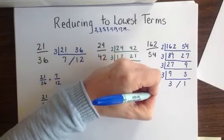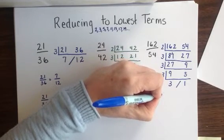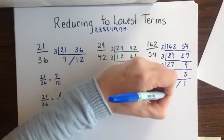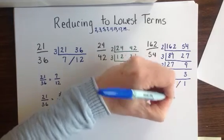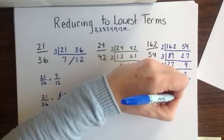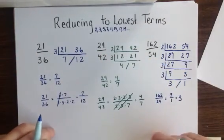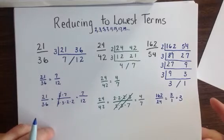So the fraction 162 fifty-fourths is equivalent to the fraction 3 ones, or 3. There are two further examples for practice on this concept.